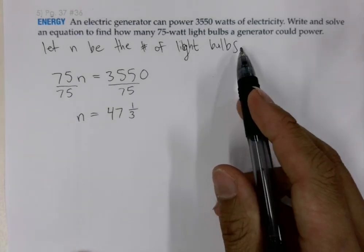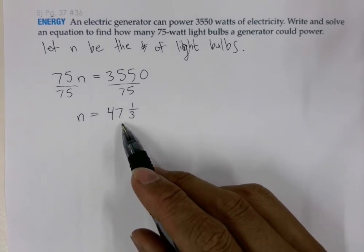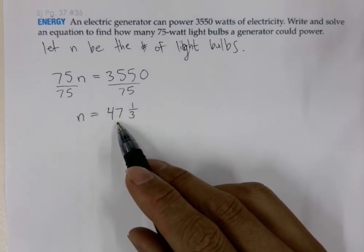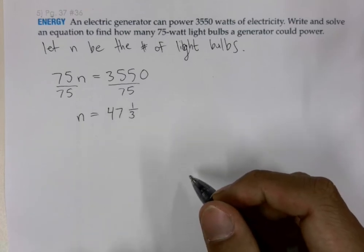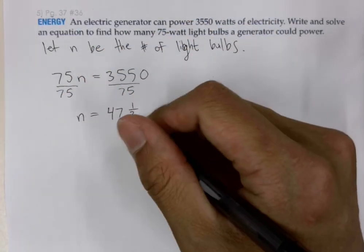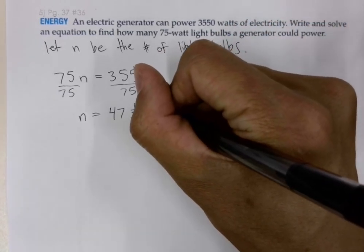So how many light bulbs can this generator power? It can power 47 light bulbs and a third of a light bulb. I'm going to go ahead and label this here, 47 and one-third light bulbs.